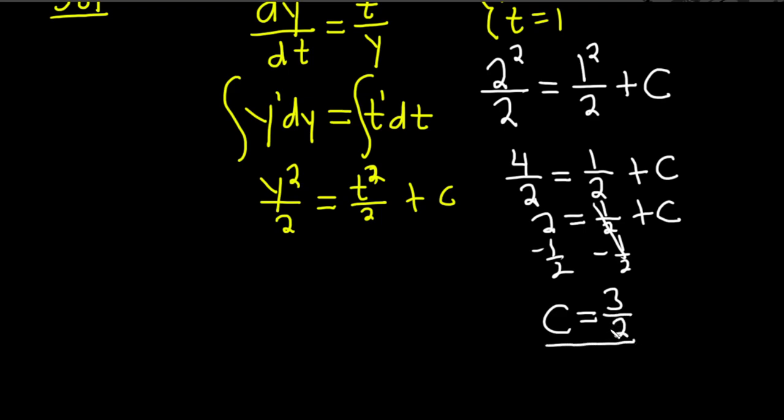So now that we have the value of c, we can plug it back into our solution and we'll be done. So we have y squared over 2 equals t squared over 2 plus 3 over 2. And I really want to clean this up. So let's do it.